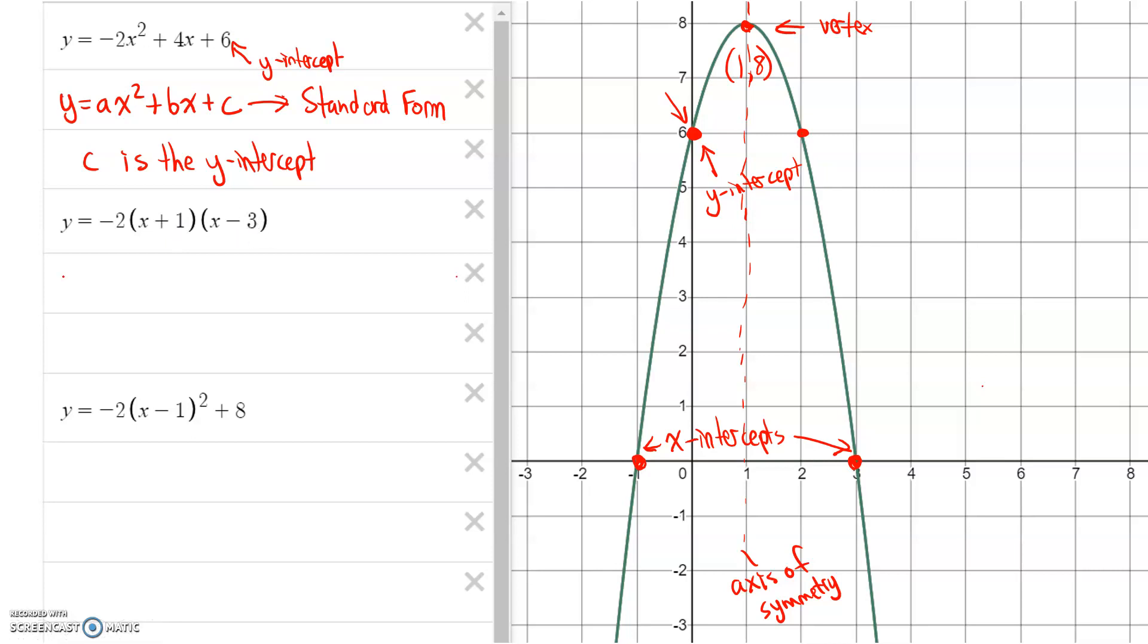And so in general, we have this form, a(x - r)(x - s), where r and s are the x-intercepts. So just to put 2 and 2 together here, that means that because it's x minus r, the x-intercept must be negative 1 because x minus negative 1 would make it plus 1.